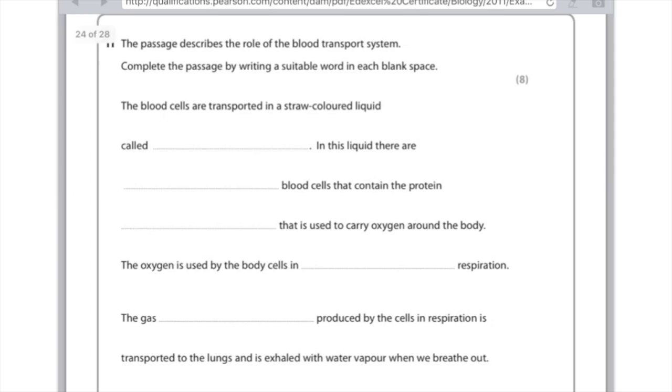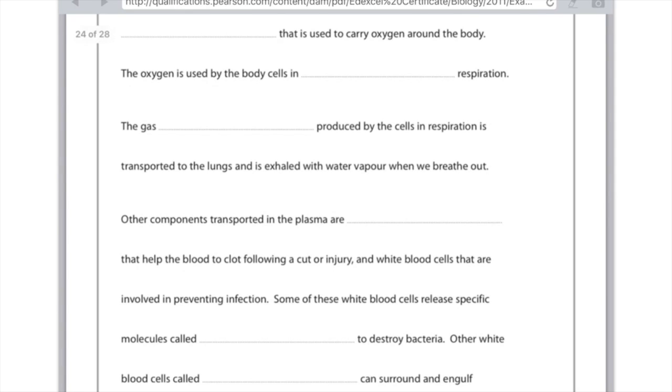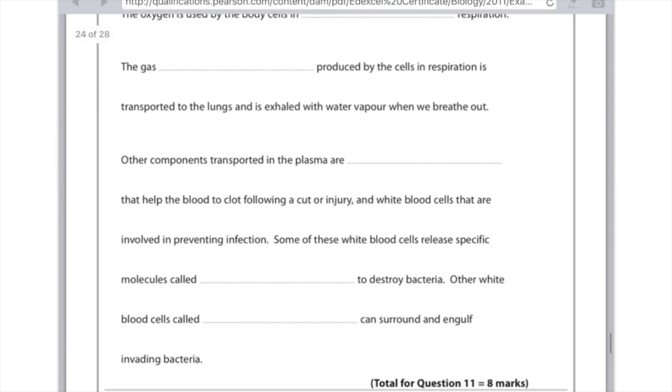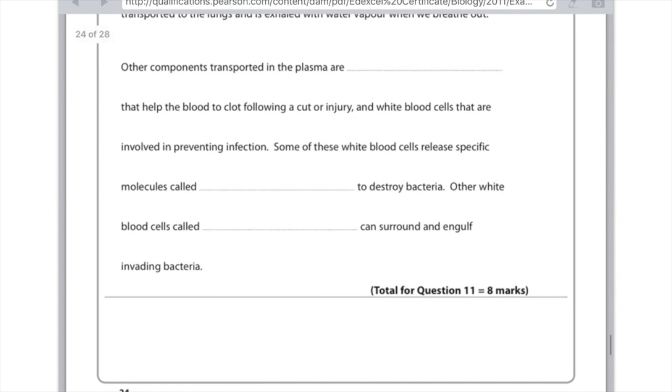Question 11. The passage describes the role of the blood transport system. Complete the passage by writing a suitable word in each blank space. The blood cells are transported in a straw coloured liquid called plasma. In this liquid there are red blood cells that contain the protein haemoglobin that is used to carry oxygen around the body. The oxygen is used by the cells in aerobic respiration. Remember that is respiration requiring oxygen, unlike anaerobic respiration which doesn't require oxygen. So the gas, carbon dioxide produced by the cells in respiration is transported to the lungs and is exhaled with water vapour when we breathe out. Other components transported in the plasma are platelets that help the blood to clot following a cut or injury and white blood cells that are involved in preventing infection. Some of these white blood cells release specific molecules called antibodies to destroy bacteria. Other white blood cells called phagocytes can surround and engulf invading bacteria.